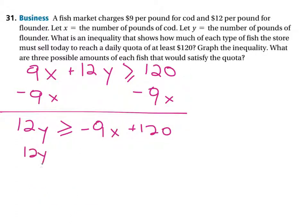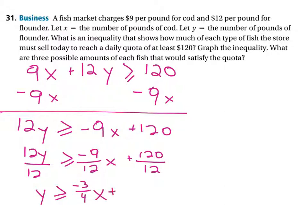We say 12Y divided by 12 is greater than or equal to negative 9 divided by 12X plus 120 divided by 12. And then that simplifies to Y is greater than or equal to, this fraction simplifies to negative 3/4ths X plus 10.